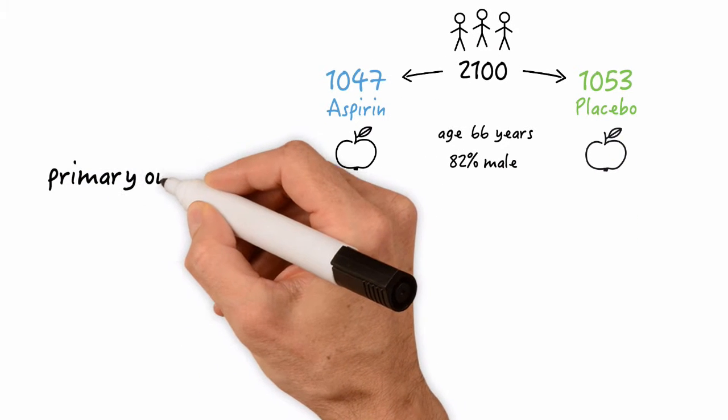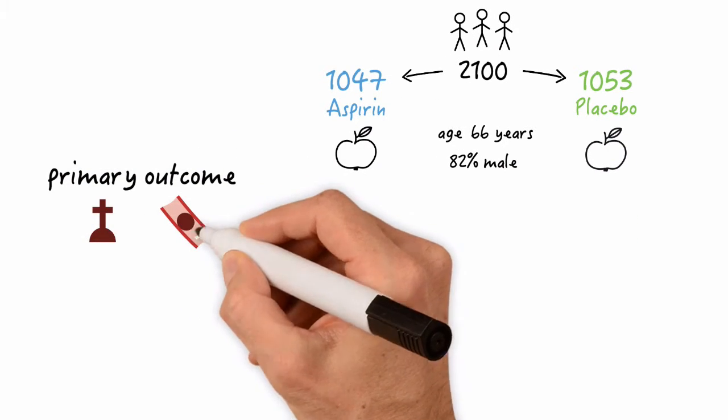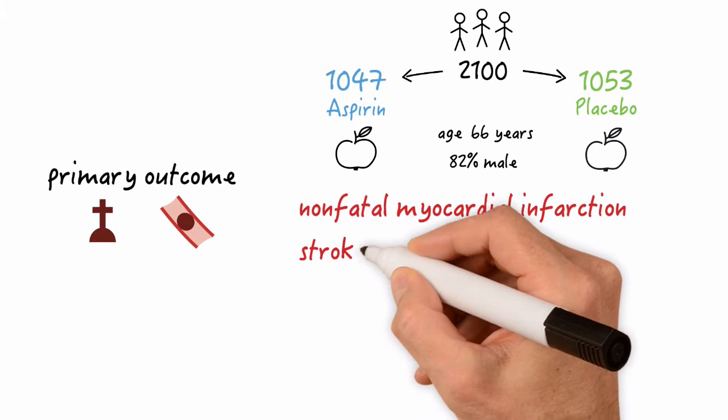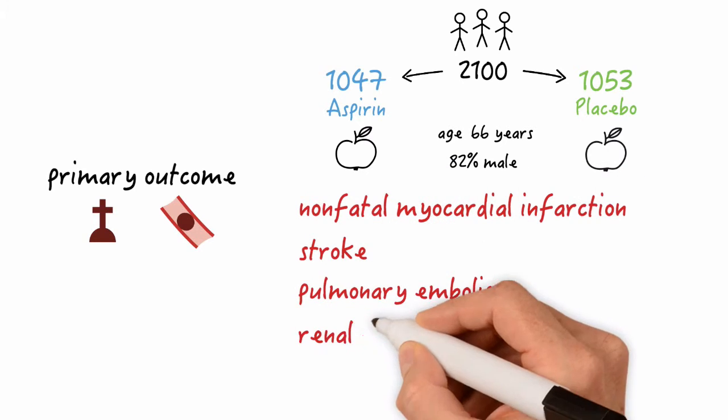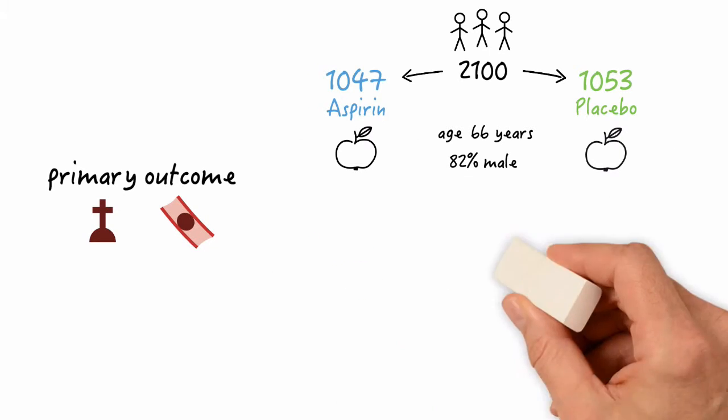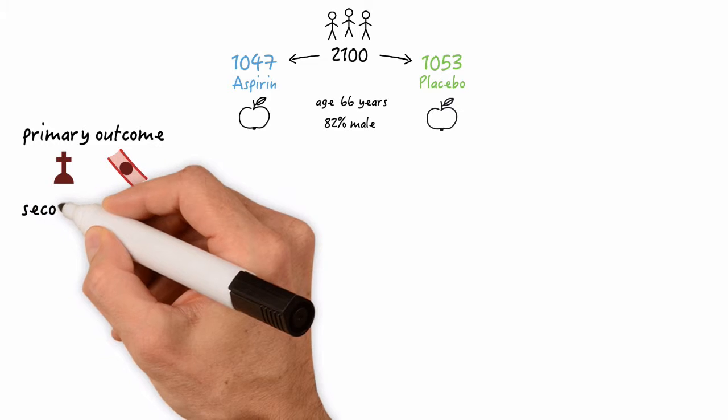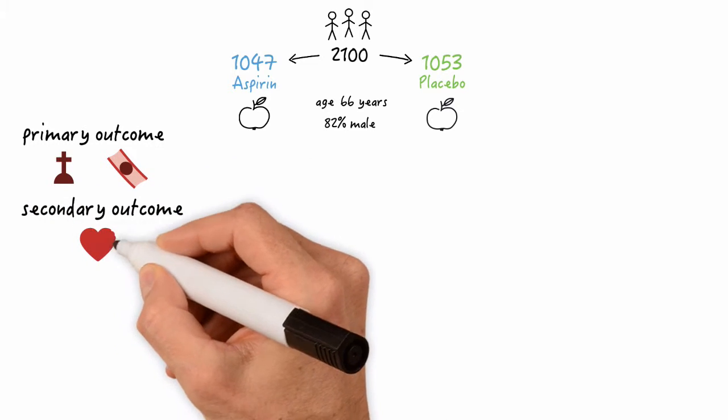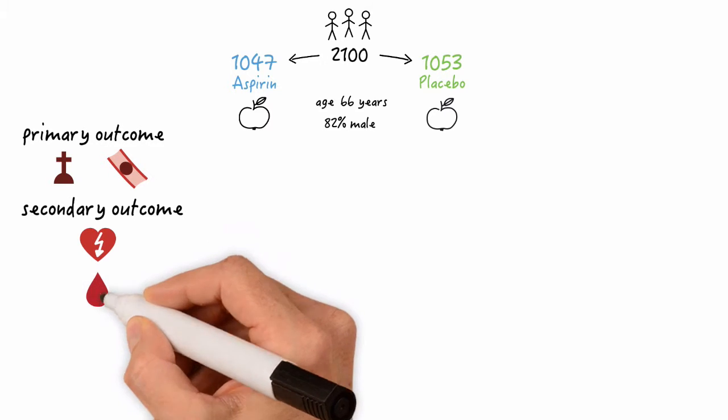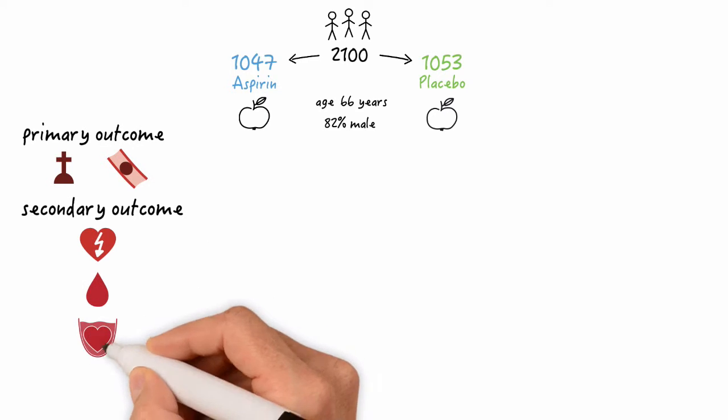The study's primary outcome was a composite of death and thrombotic events that included non-fatal myocardial infarction, stroke, pulmonary embolism, renal failure, or bowel infarction occurring during the initial 30 postoperative days. Important secondary outcomes included non-fatal myocardial infarction occurring 30 days postoperatively, major bleeding leading to re-operation, and cardiac tamponade.